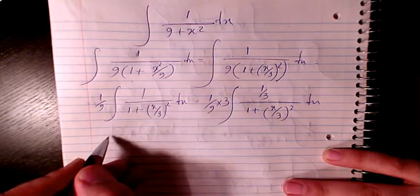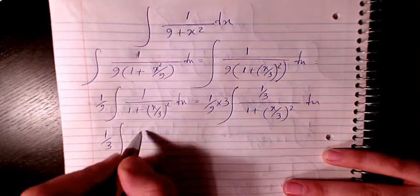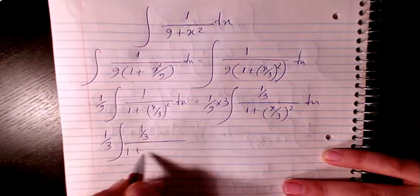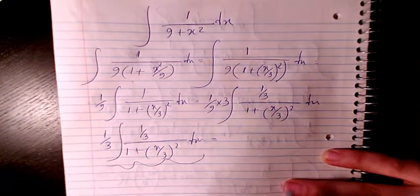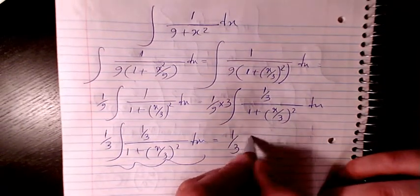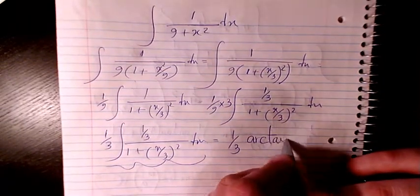So then I have 1 over 9 times 3 will be 1 over 3, the integration of 1 over 1 plus x divided by 3 squared dx. And then this part will be the integration of arctangent.